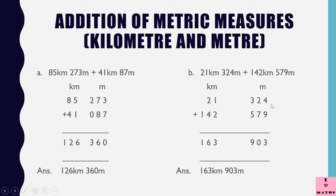Here, 9 and 4 is 13 — 3 here and 1 carry over. 2 and 1 is 3, 3 plus 7 is 10 — 0 and 1 carry over. 5 plus 3 is 8 and 1 is 9. Now 2 plus 1 is 3, 4 plus 2 is 6 and 1 will come here. So this is 163 kilometers 903 meters.